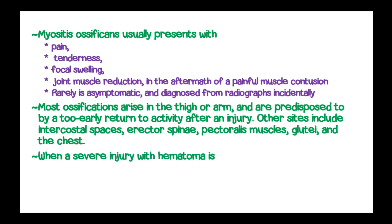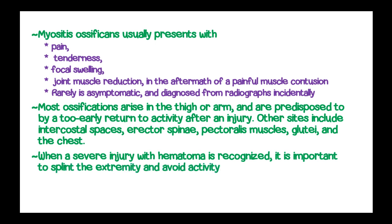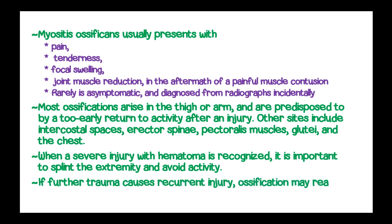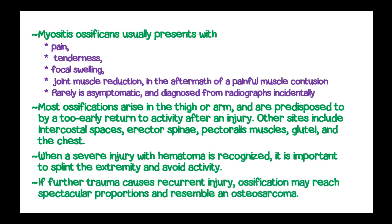When a severe injury with hematoma is recognized, it is important to splint the extremity to avoid excess activity. If further trauma causes recurrent injury, ossification may reach spectacular proportions and resemble an osteosarcoma.